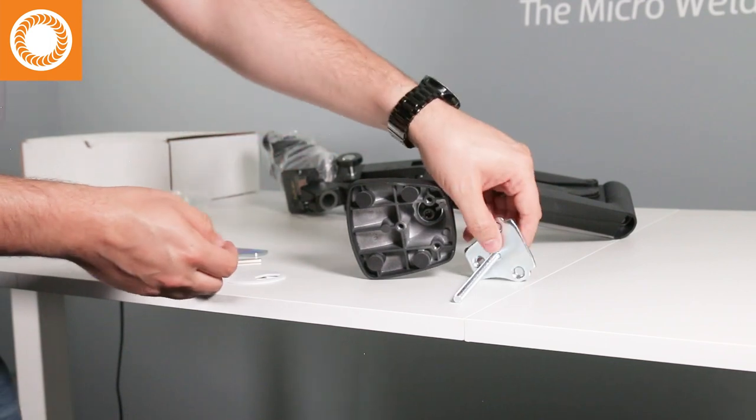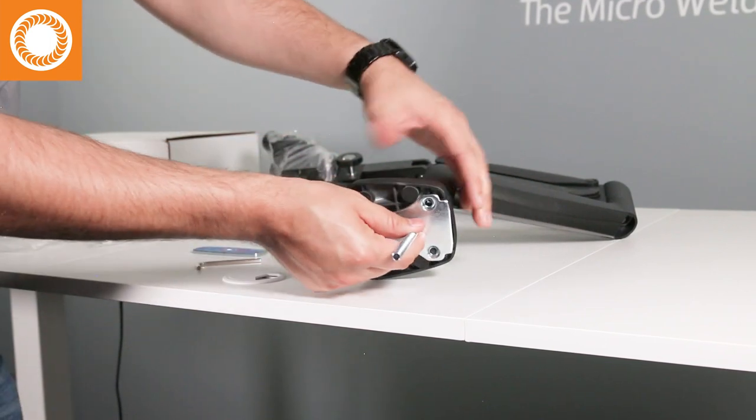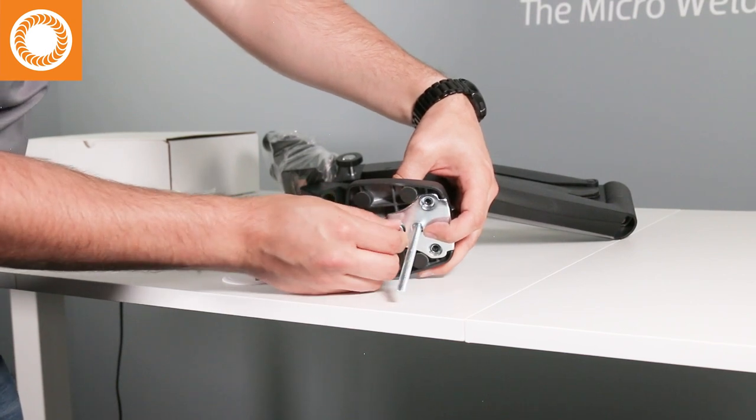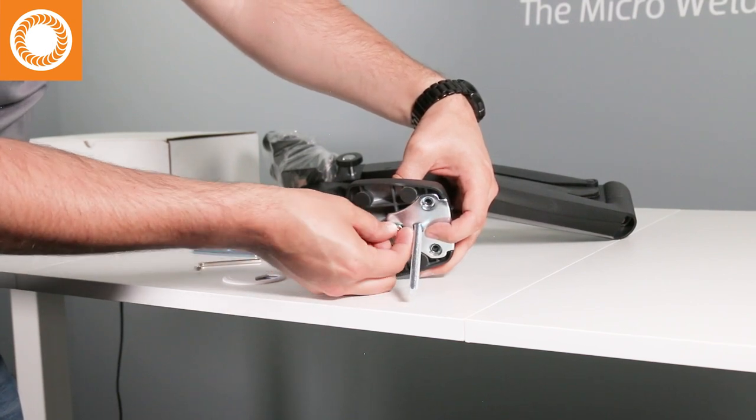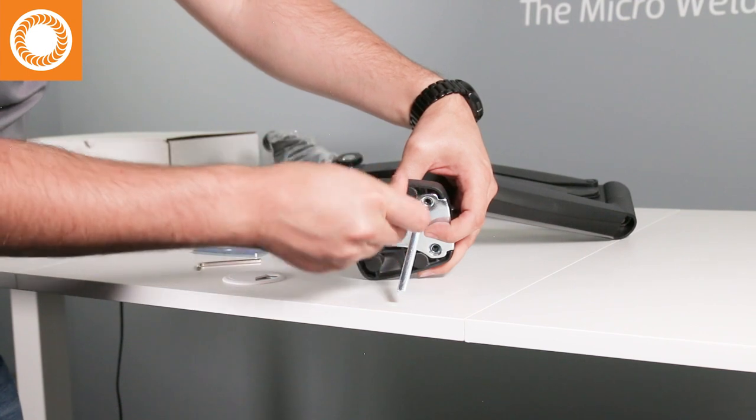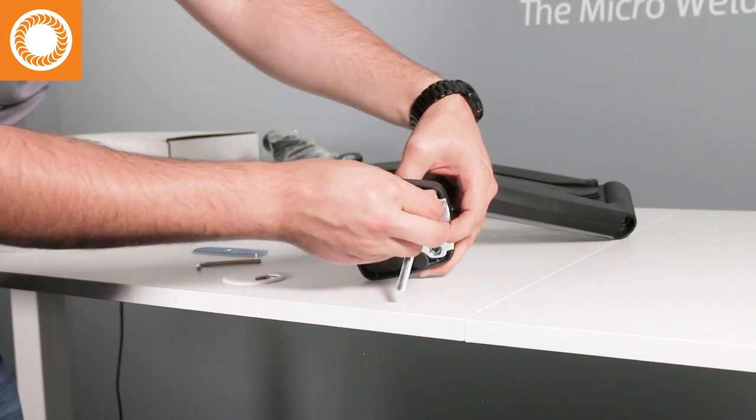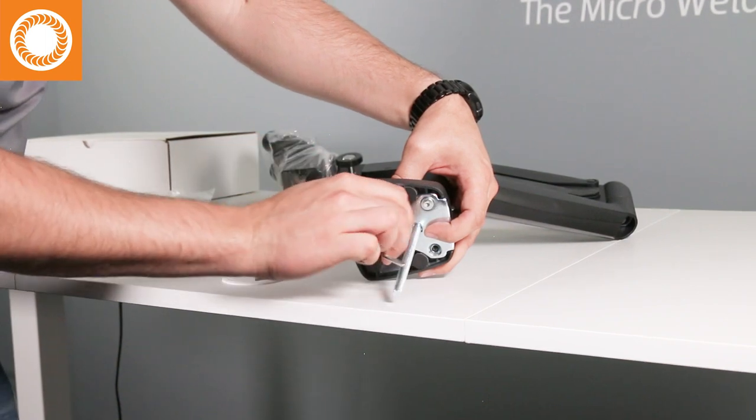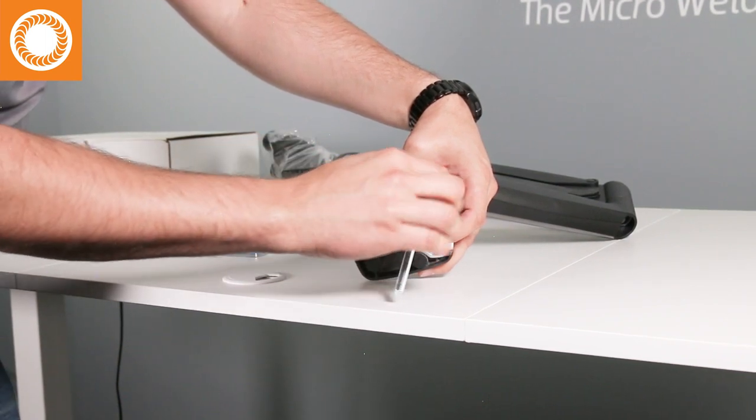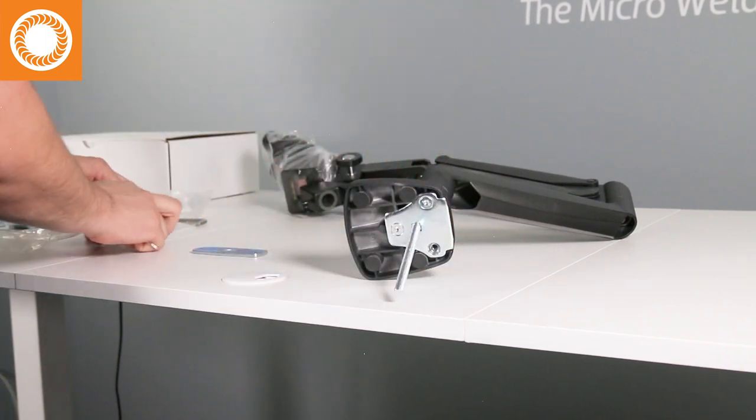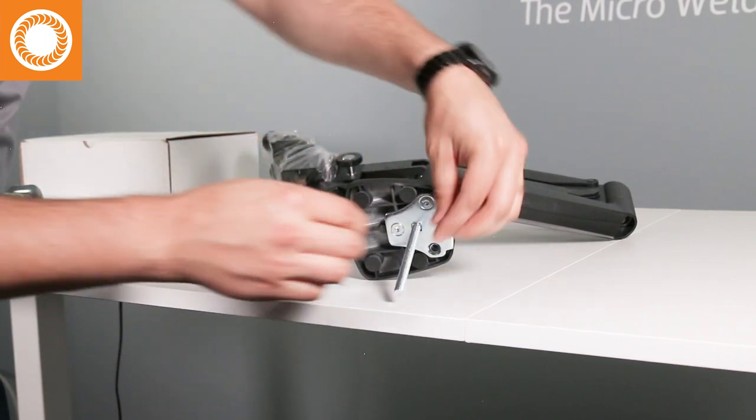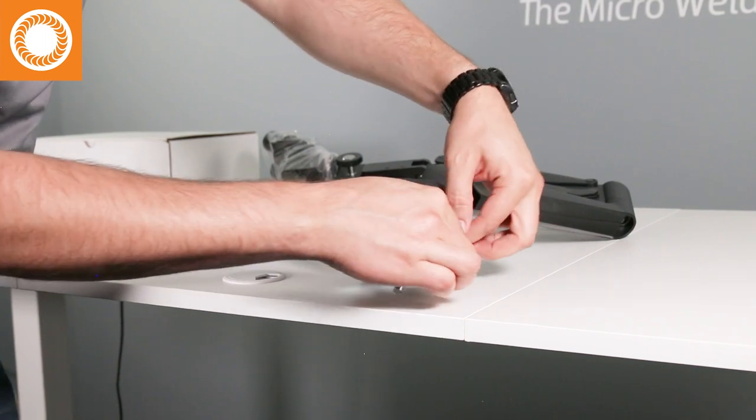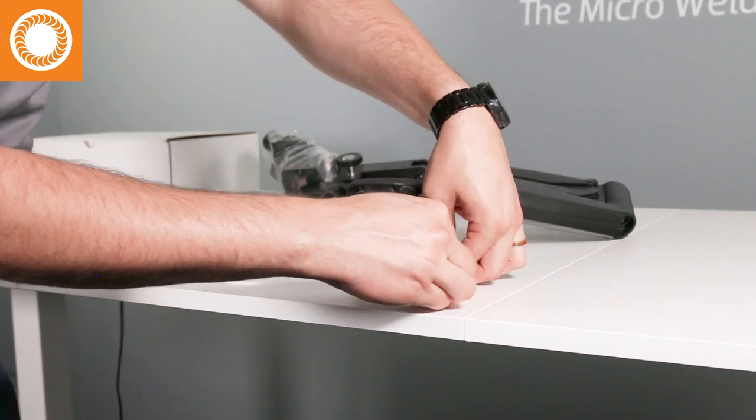We're going to line this up just like so, and with our finger we're just going to find it and gently screw that on. Then I can use my wrench to quickly spin the rest of the way. Let's get one more screw here, or you can set it up like this and do the whole process with the wrench.